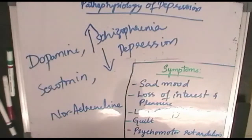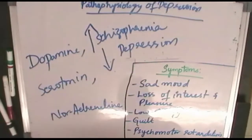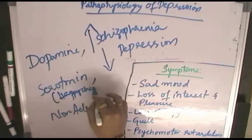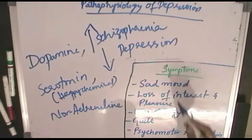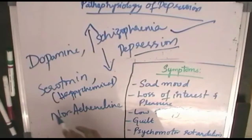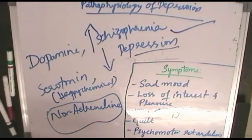In depression, the dopamine hypothesis states there are decreased levels of dopamine. Similarly, serotonin — a happy chemical as mentioned in the last class — when decreased leads to low mood and sad mood changes. There are also decreased levels of serotonin in depression. The same applies to noradrenaline, a neurotransmitter and hormone that increases your activity levels.